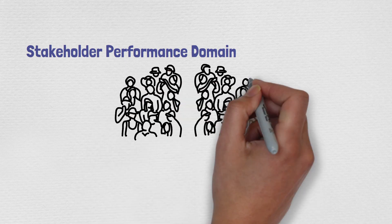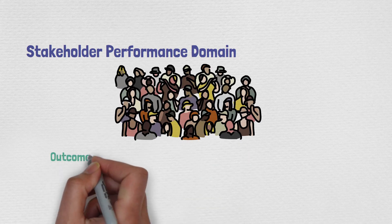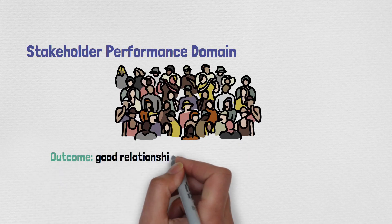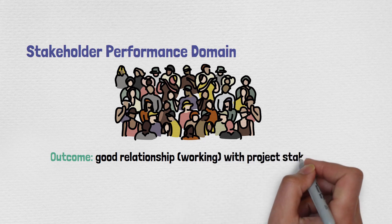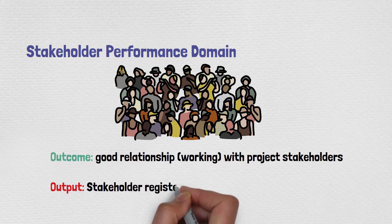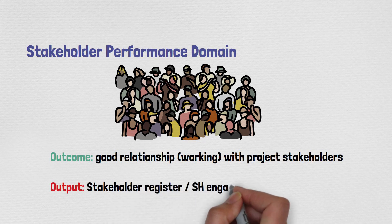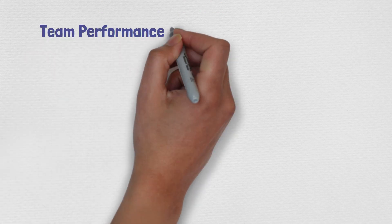First, the Stakeholder performance domain. This is all about strategies and actions to promote productive involvement of stakeholders in project decision-making and implementation. The outcome is a good relationship with project stakeholders. The outputs from PMBOK 6 were the stakeholder register and stakeholder engagement plan — so there's a clear difference between outcome and output.